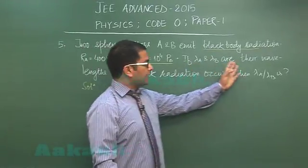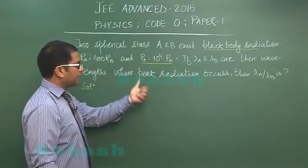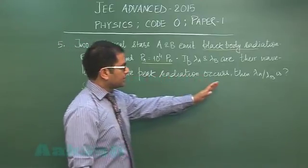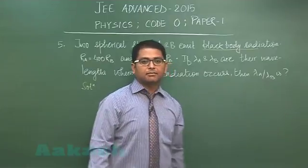If lambda A and lambda B are their wavelengths where peak radiation occurs, then we need to calculate lambda A upon lambda B.